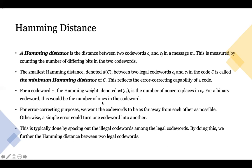For our error correcting purposes, we want the code words to be as far away from each other as possible — and now we're talking about legal code words. Otherwise, a simple error could turn one code word into another, making it very easy to modify the ciphertext to get another legal code word. The solution is to space out the legal code words so that between legal code words you have many illegal ones. By furthering this distance, we increase the minimum Hamming distance of C.